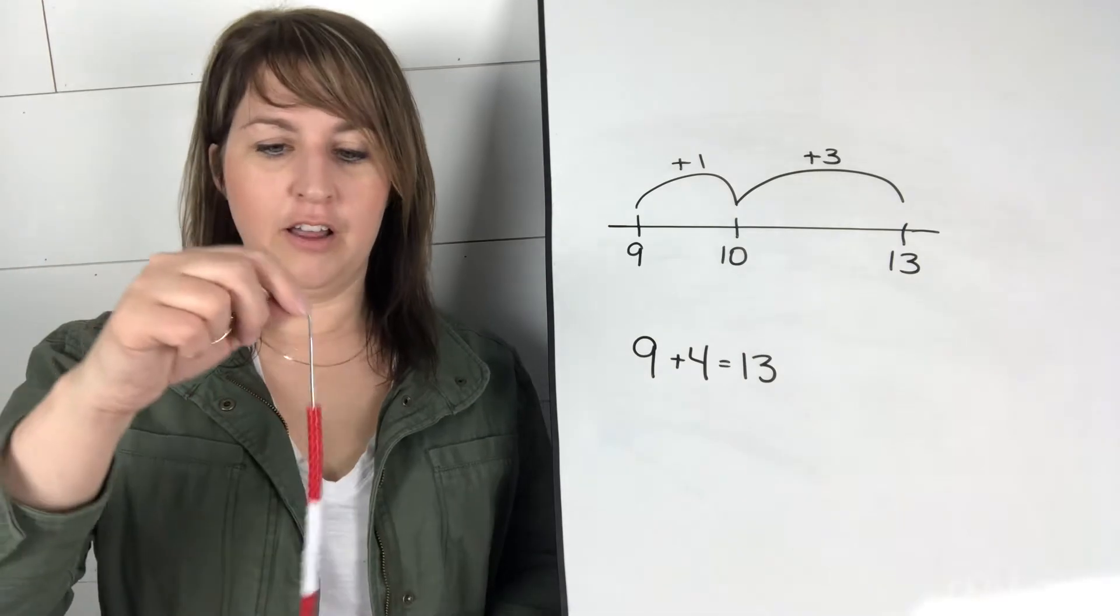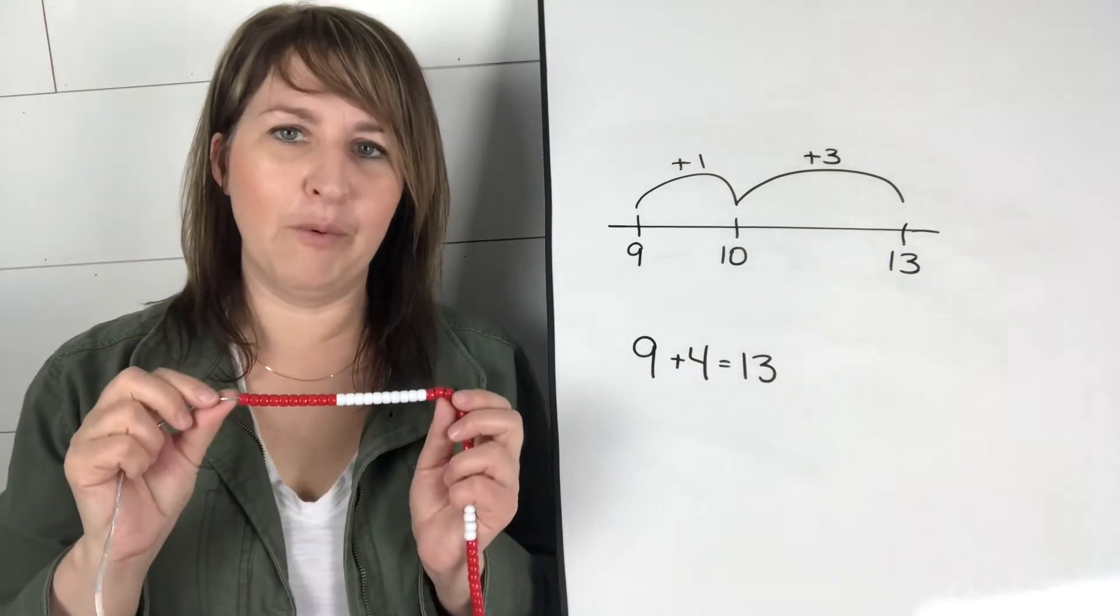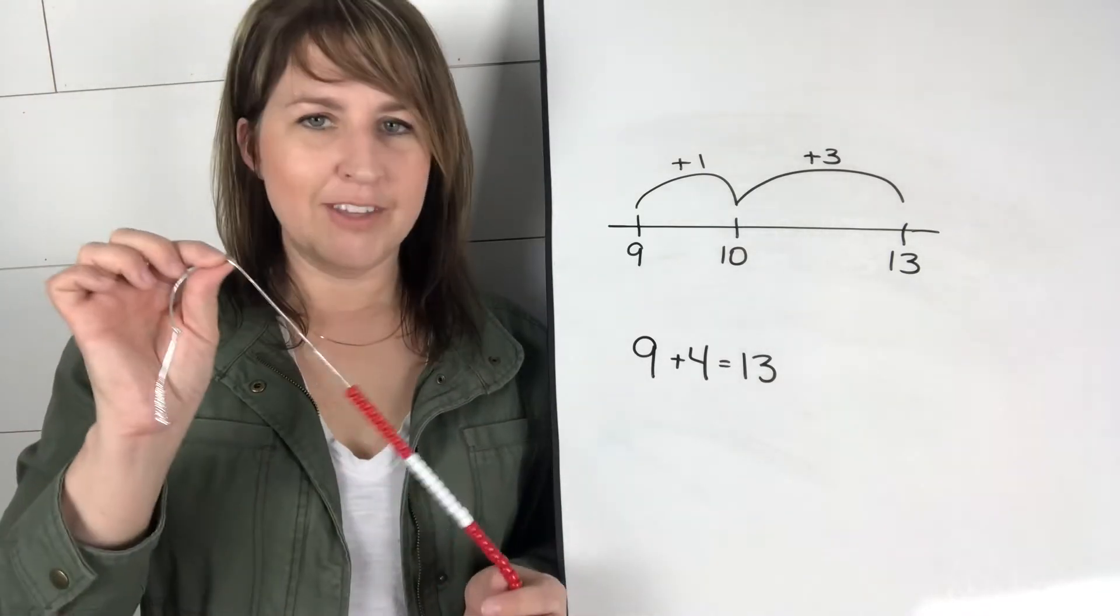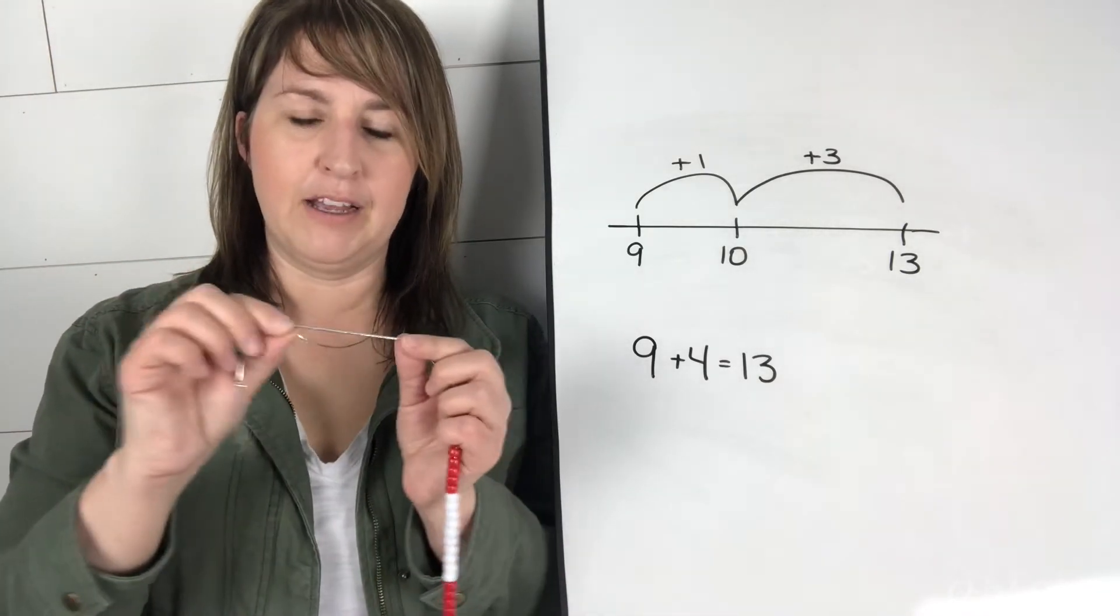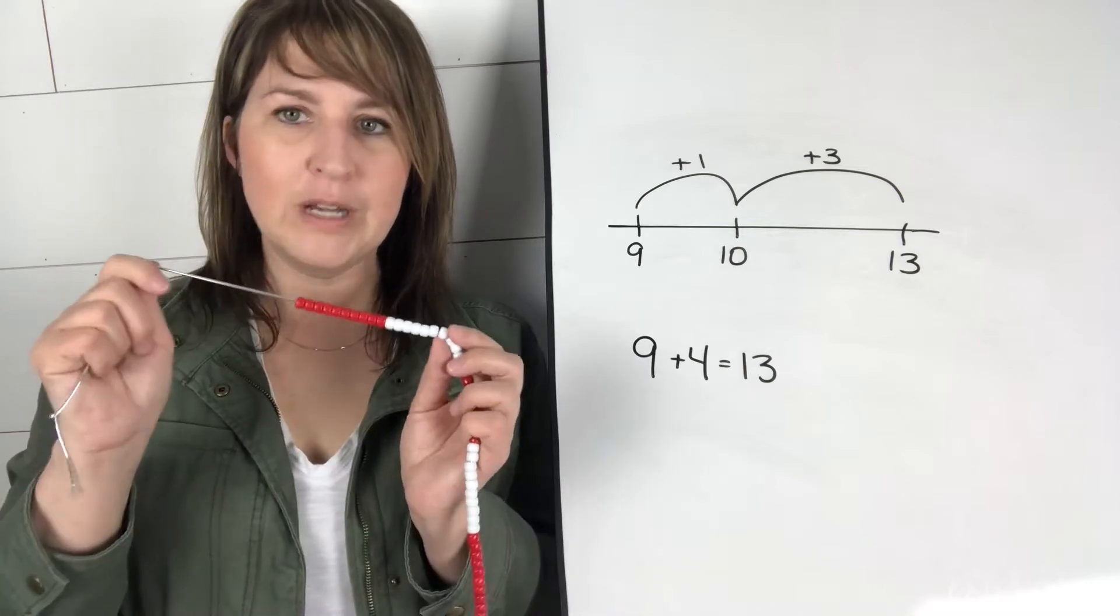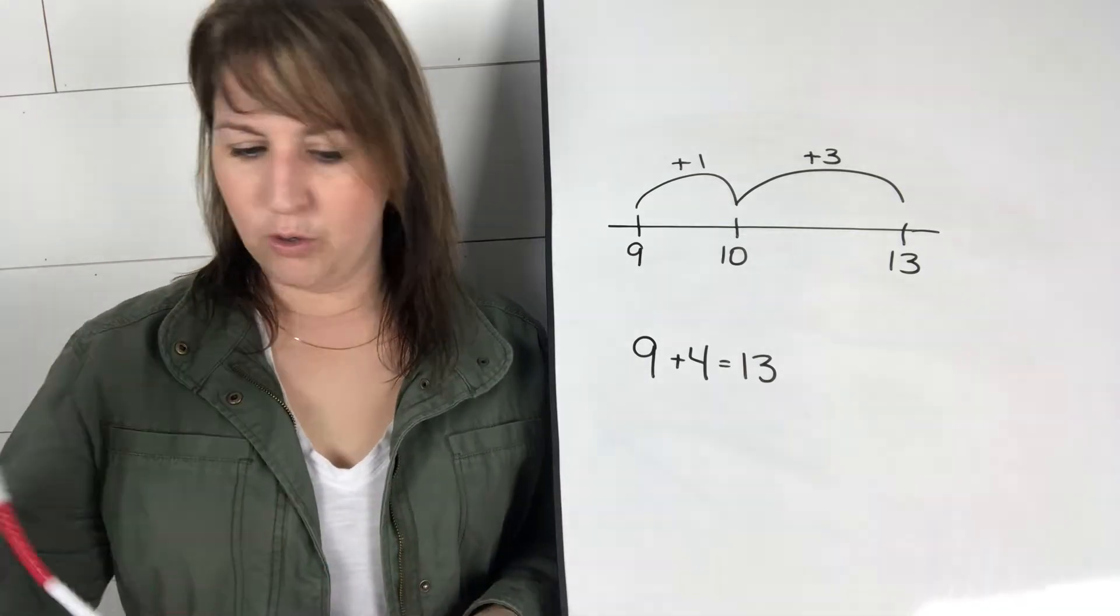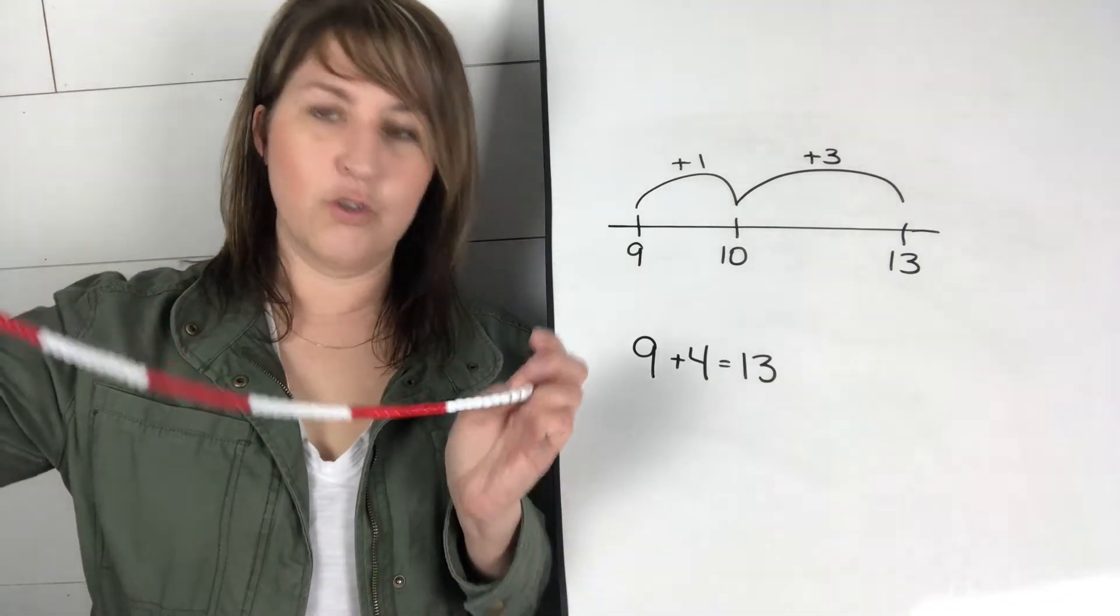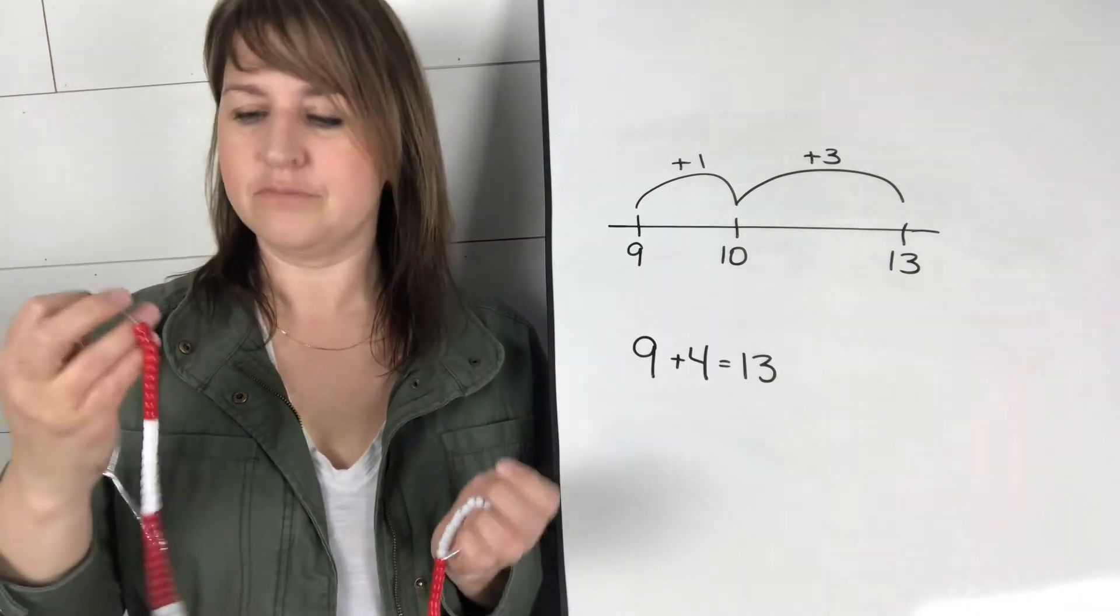First of all, how to make these very inexpensively. You could buy one or a set at a teacher supply store or online, but I made this one very inexpensively with some elastic craft rope and pony beads that I ordered online. You make 10 groups of 10 so that it's a hundred bead string altogether.